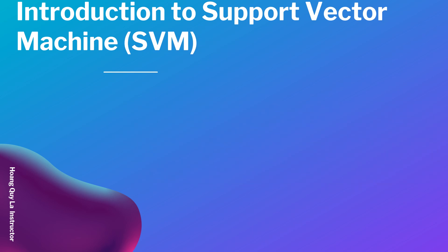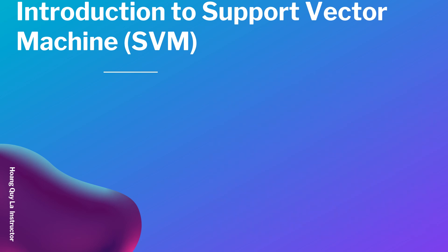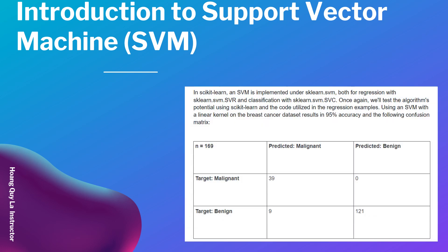Now let's look at the image of the Support Vector Machine. As you can see, there is a margin illustrated, along with the support vectors highlighted in the image.